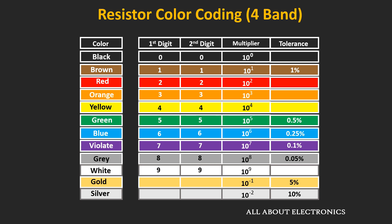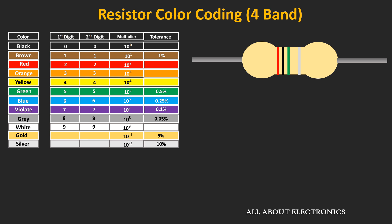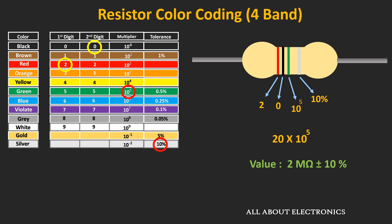Let us take an example with a 4-band resistor. The first two color bands are red and black respectively. Red represents the value of 2, while black represents the value of 0. The third band is green, which represents a multiplying factor of 10 to the power 5. The fourth tolerance band is silver, representing 10% tolerance. Combining all four values, the resistor value is 20 × 10⁵, which equals 2 MΩ ± 10%.